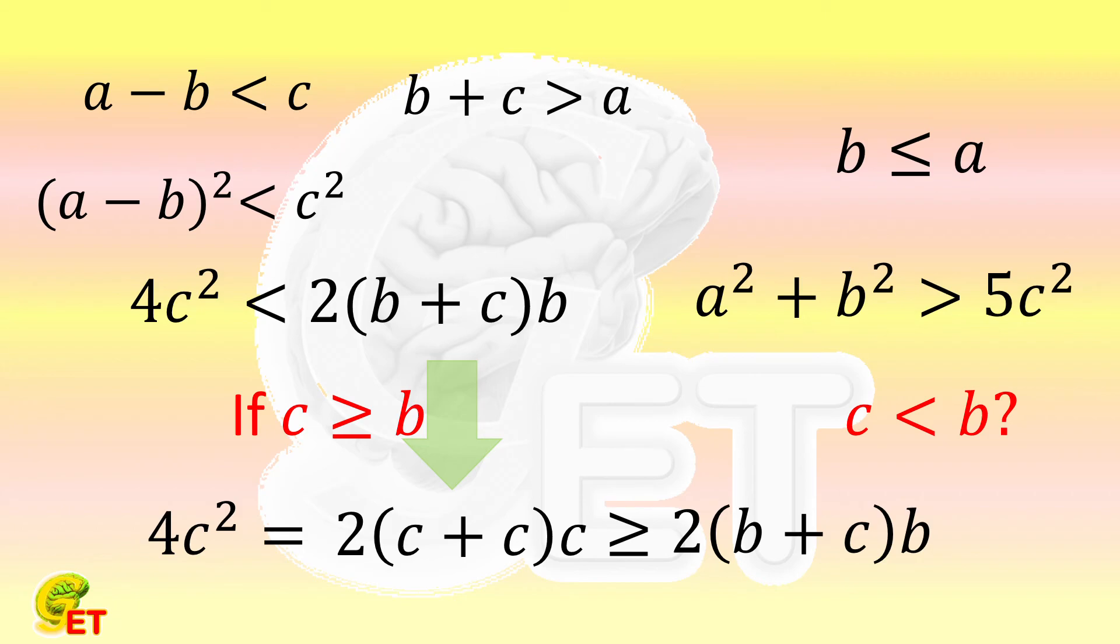So we get 4c² is not smaller than 2(b + c)b. This contradicts the previous conclusion.